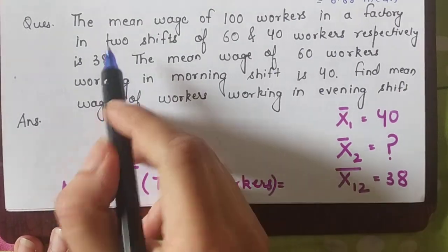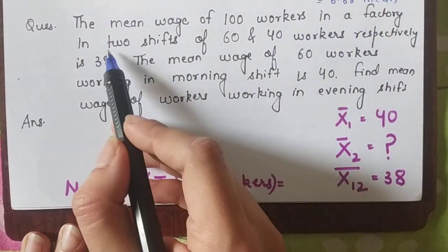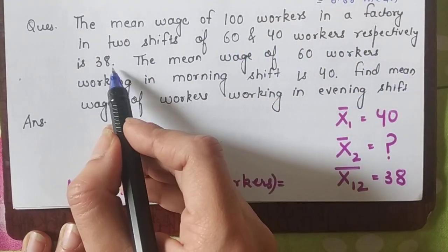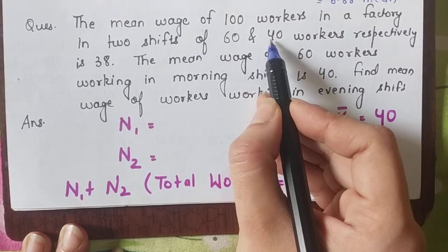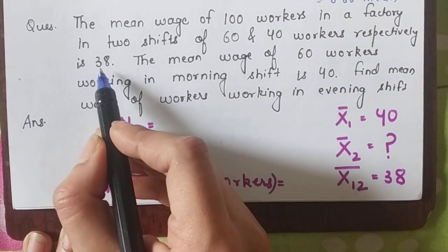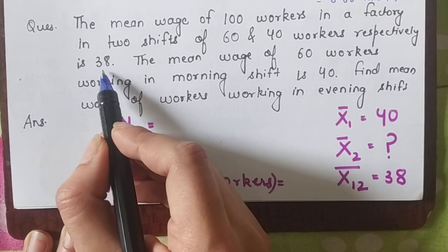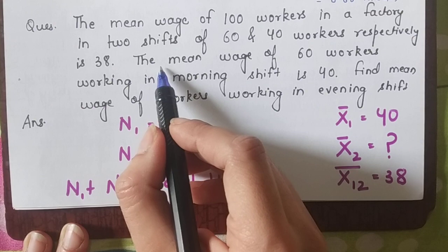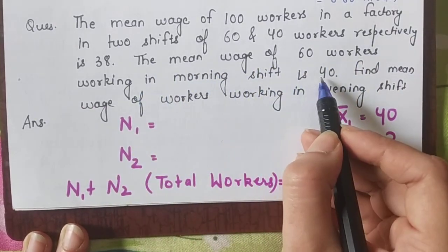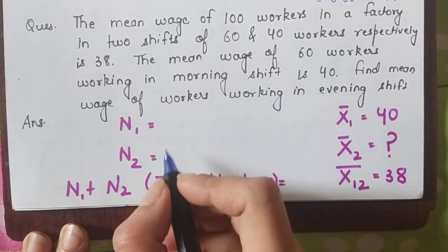So the question says: The mean wage of 100 workers in a factory working in 2 shifts of 60 and 40 workers respectively is 38. Since there are 60 and 40 workers sets, the combined mean of all 100 workers is 38.